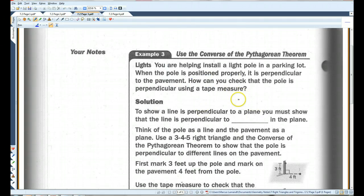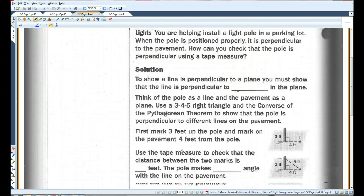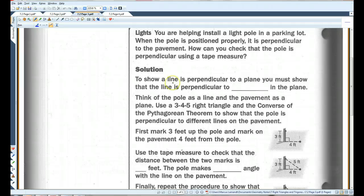You are helping install a light pole in a parking lot. When the pole is positioned properly, it is perpendicular to the pavement. How can you check that the pole is perpendicular using a tape measure? Okay. To show that a line is perpendicular to a plane, you must show that the line is perpendicular to two lines in the plane.